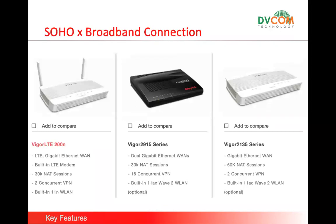The first SOHO router is the Vigor LTE 200N. The LTE indicates you can connect a SIM card to get internet access. It also has a WAN port, supports up to 30,000 NAT sessions, and supports two concurrent VPNs. This router also acts as a wireless access point so you can configure SSIDs without needing a separate access point. It's especially good for remote locations where you simply insert a SIM card to get internet.